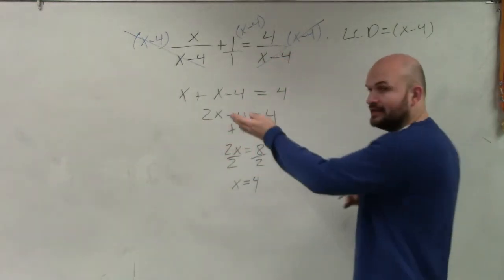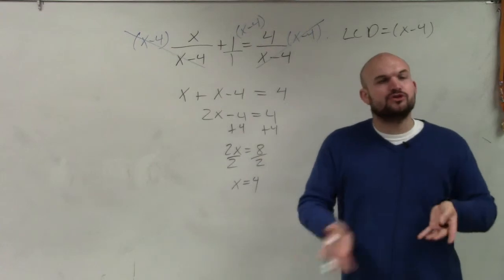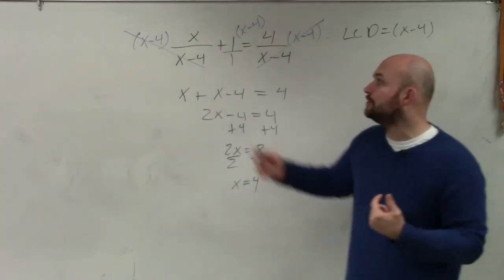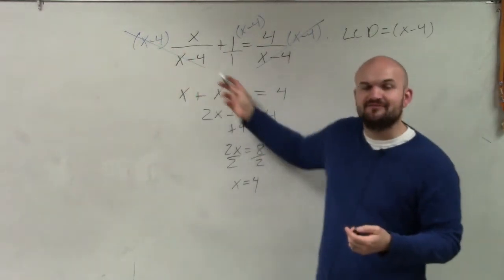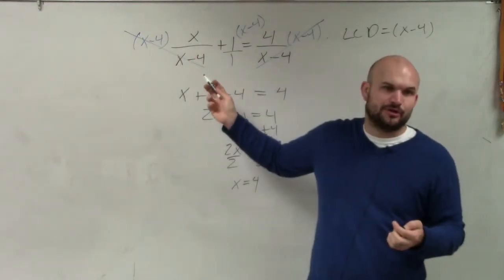However, when you're solving, we're not trying to get common denominators. We're trying to eliminate them. So what we're trying to do is multiply by what's going to divide out in the denominator and numerator. Okay?